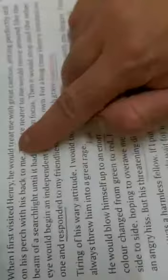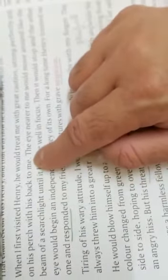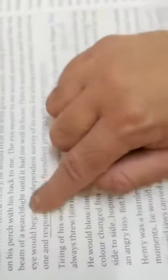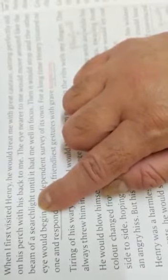When I first visited Henry, he would treat me with great caution, sitting perfectly still on his perch with his back to me. The eye nearer to me would move around like the beam of a searchlight until it had me well in focus. Then it would stop, and the other eye would begin an independent survey of its own.